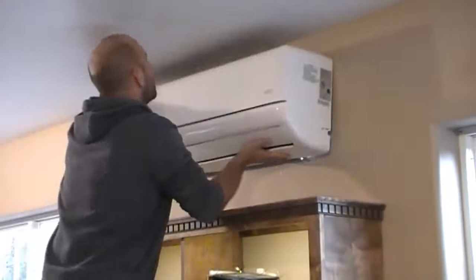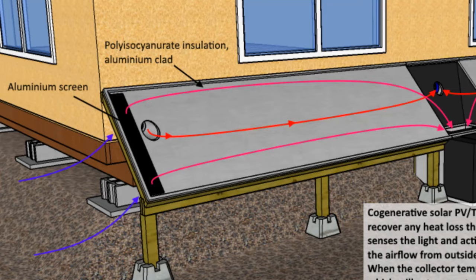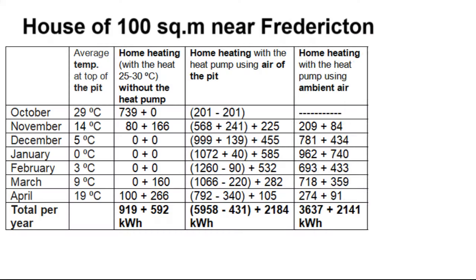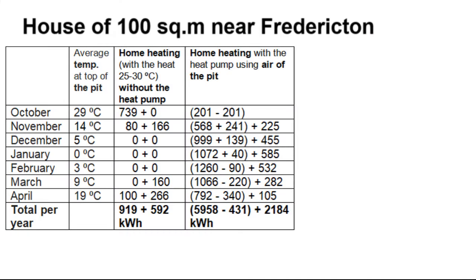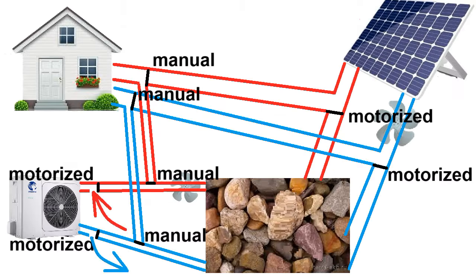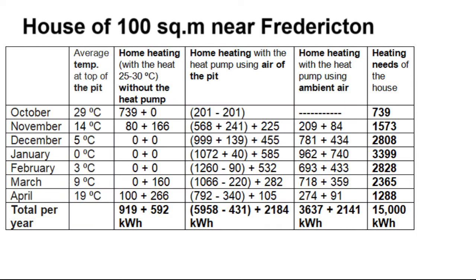Also, let's remember that the heat pump can take air not only from under the solar panels, but also from the street. This is the heat produced by our heat pump in traditional mode from the street air, and we need this traditional mode to fully cover the heating needs of a 100 m² house near Fredericton.